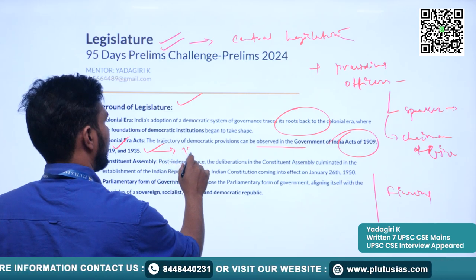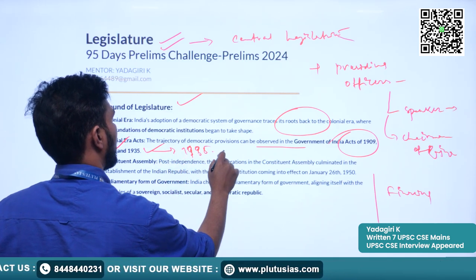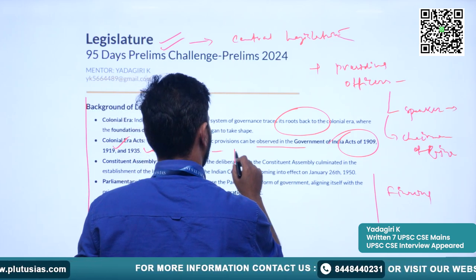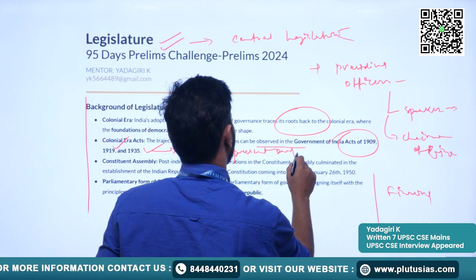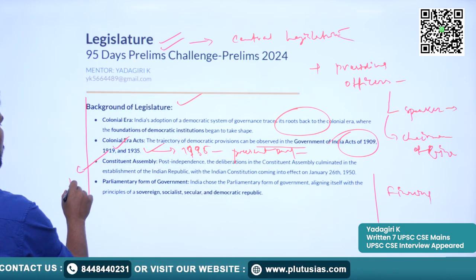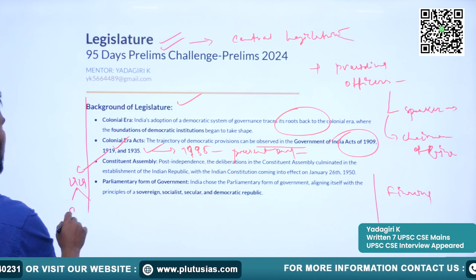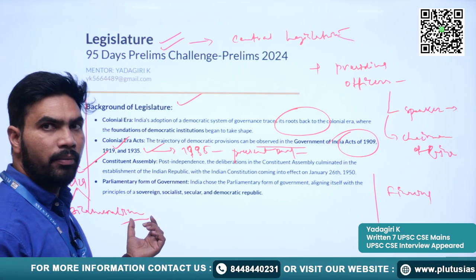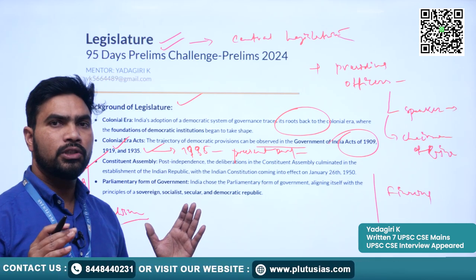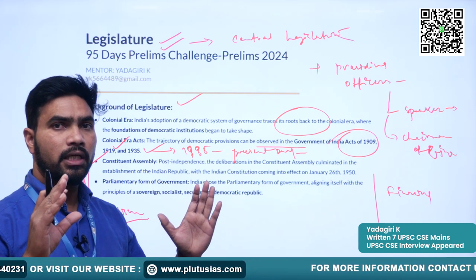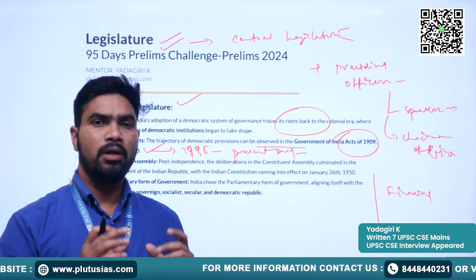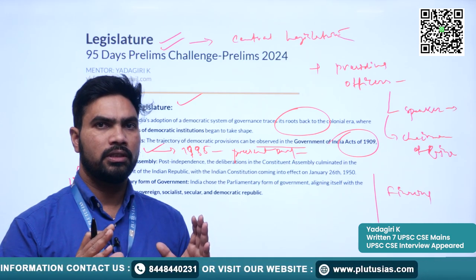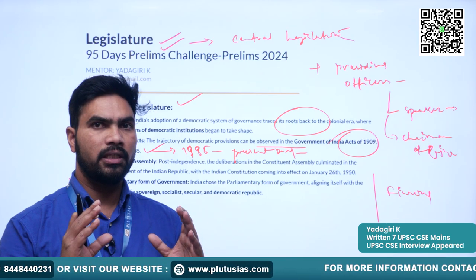We consider the 1935 Act as the blueprint for the present-day Constitution. Through the 1919 Act, a system of bicameralism was introduced in British India, meaning two houses. There were two houses at the center — one directly representing the people, and the second chamber representing the provinces, meaning the states.